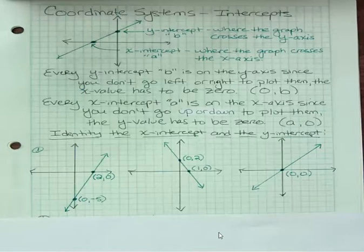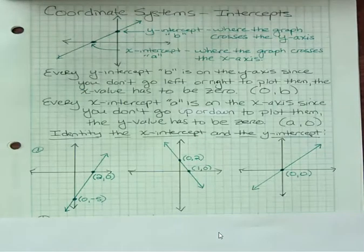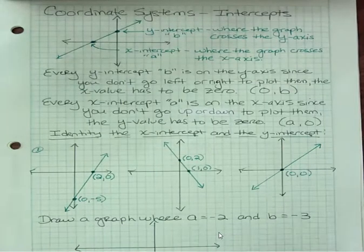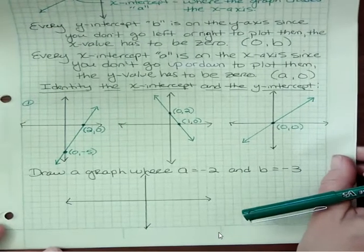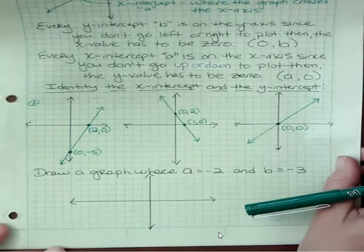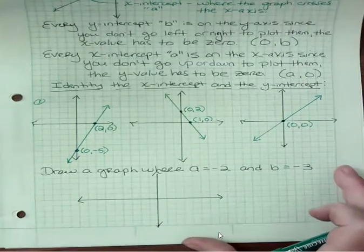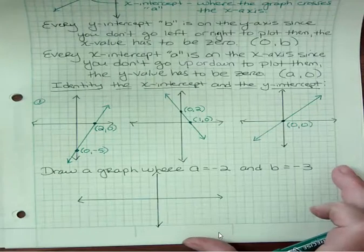And that's the one time when they can share the same point, because it is just one point. Both x and y are both being zero makes it an origin point. Then the last little piece on this video is to draw a graph where a is negative two and b is negative three. What does a stand for? A is the x-intercept. And what does b stand for? B is the y-intercept.